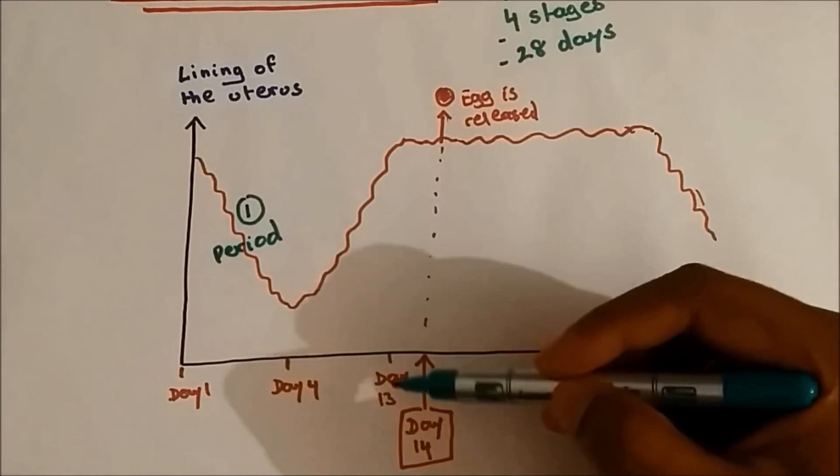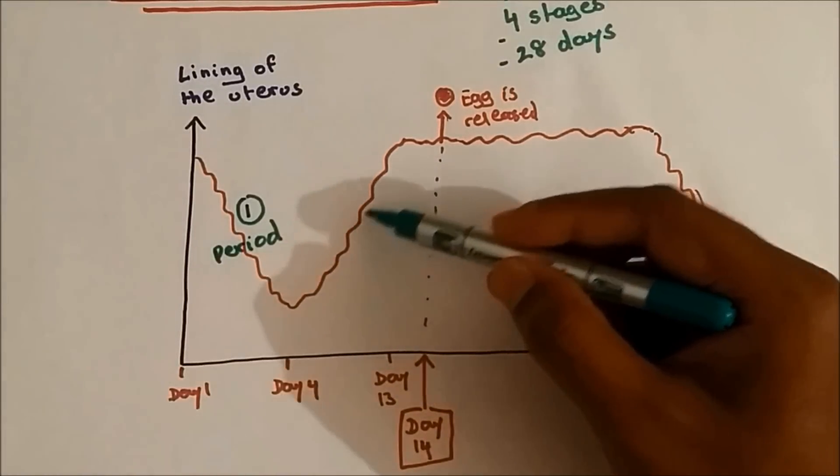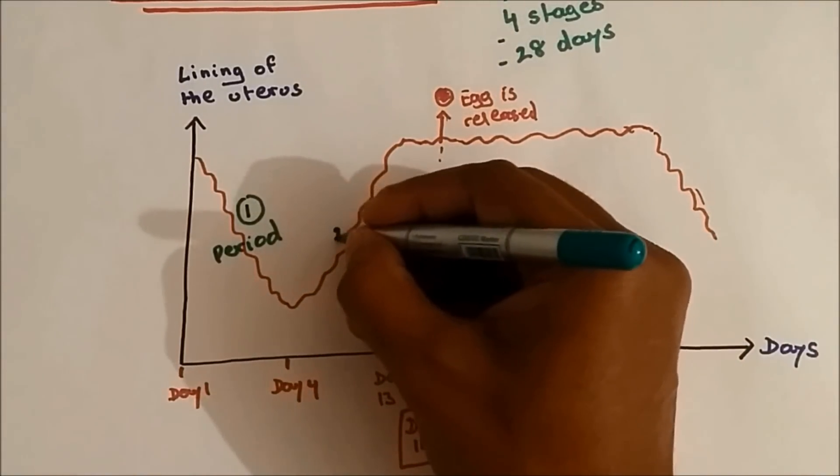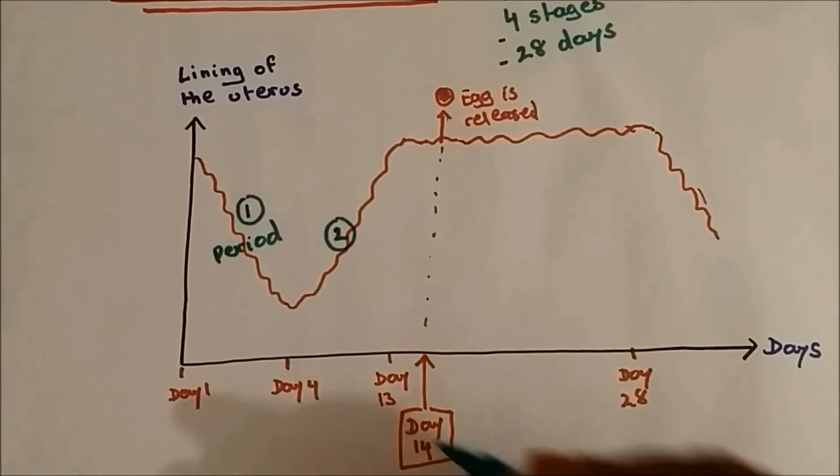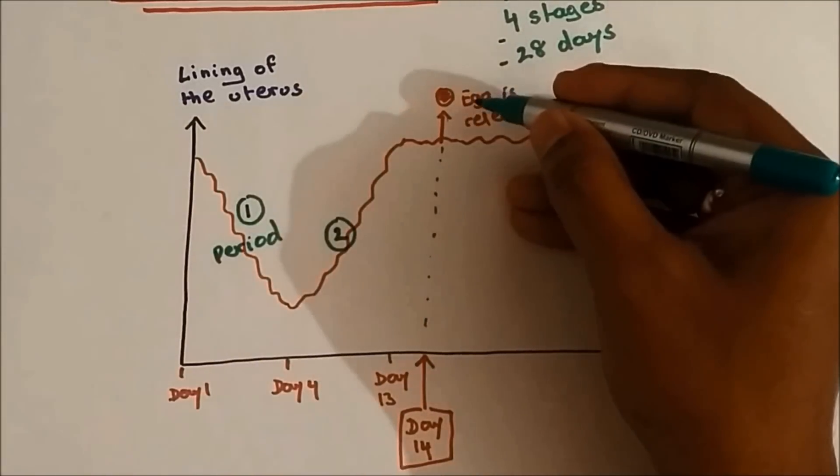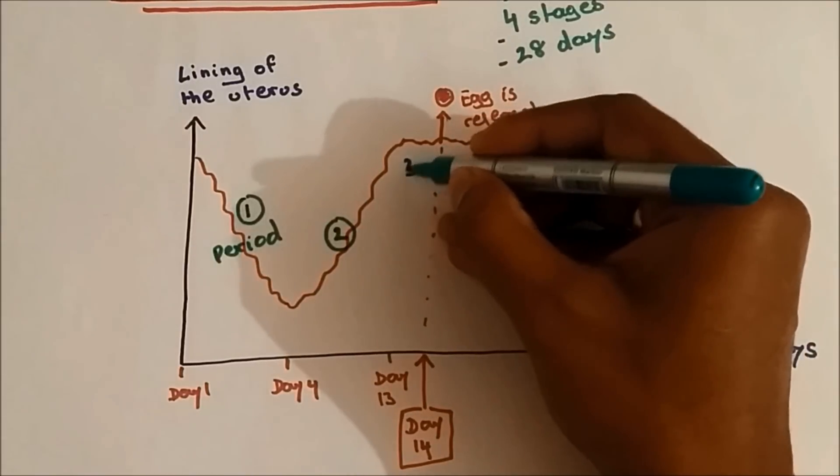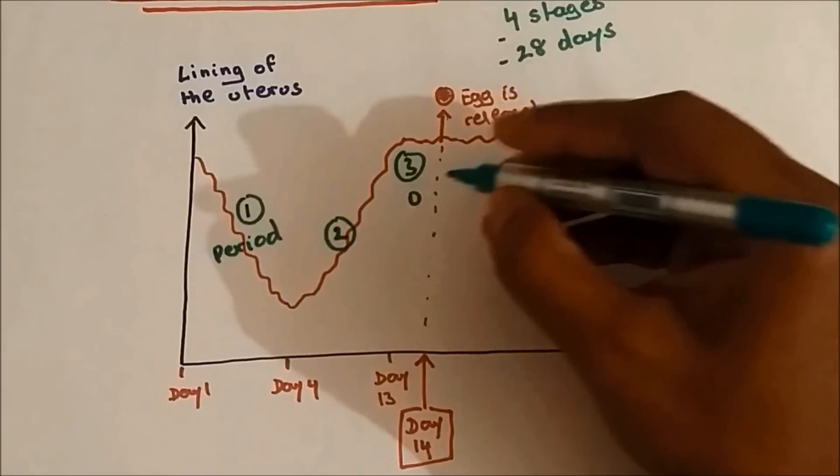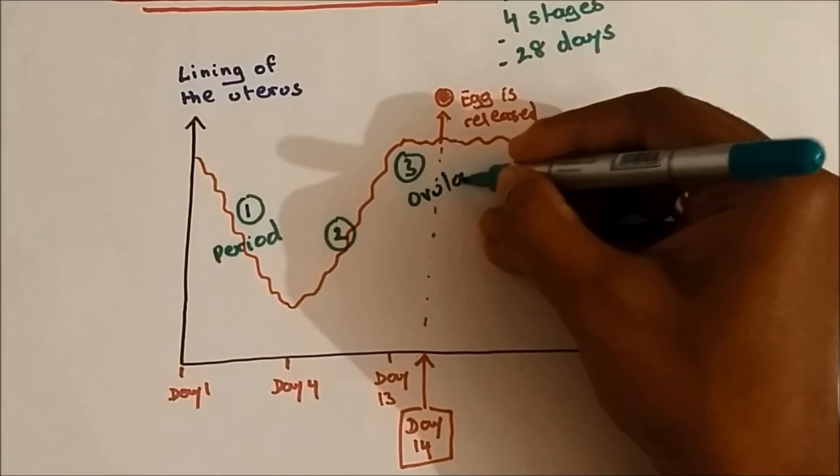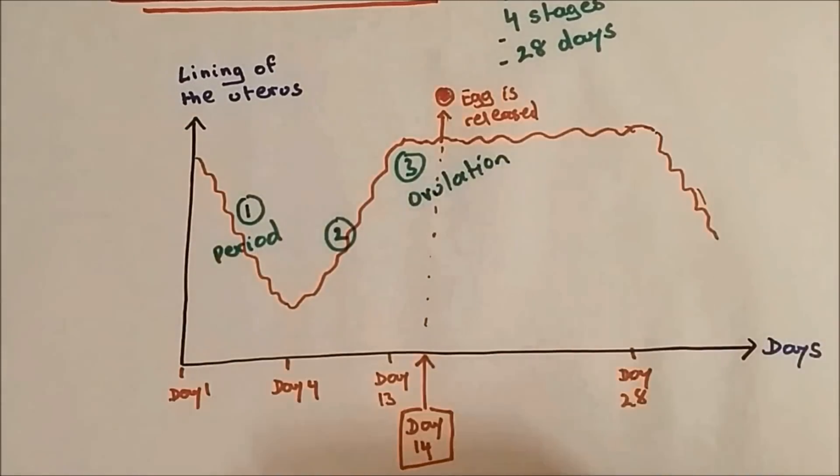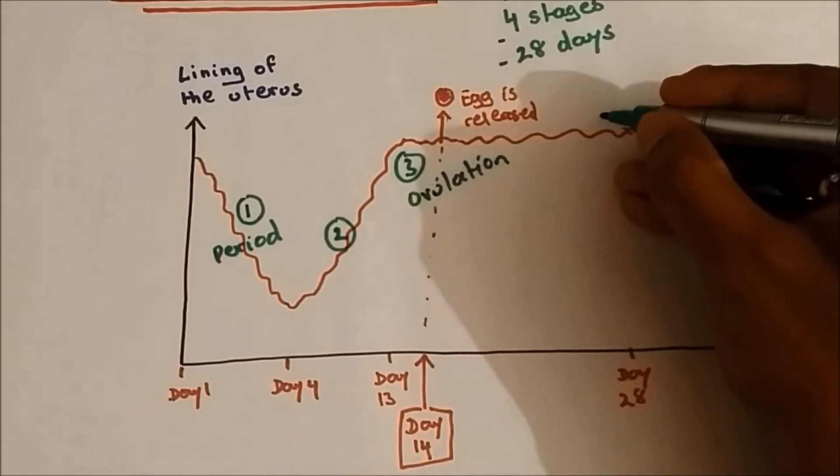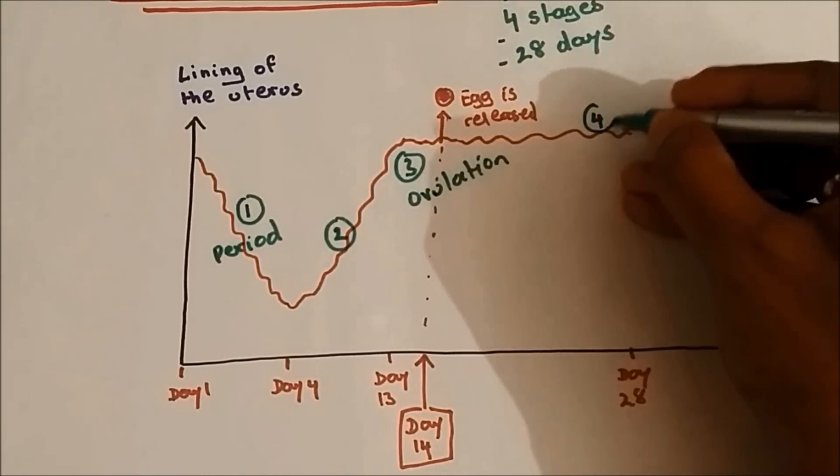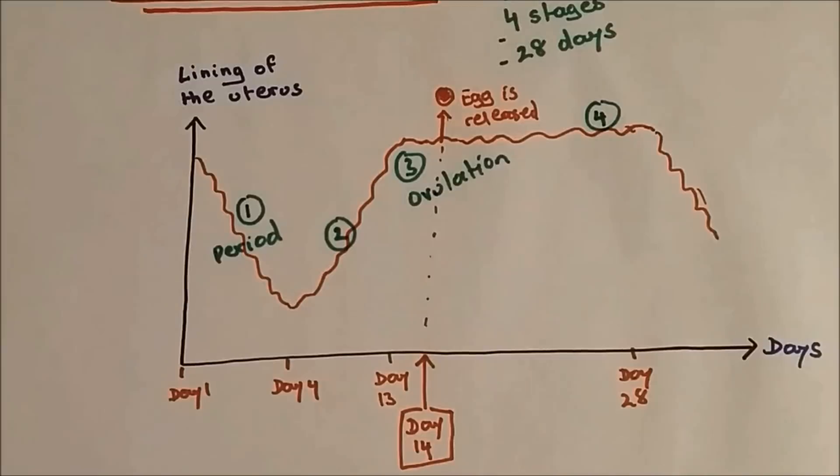From day four to day 13, the lining of the uterus is reformed, that's stage two. On day 14, the egg is released, that's stage three, and releasing of egg from ovary is called ovulation. And number four is when the lining of the uterus is maintained.